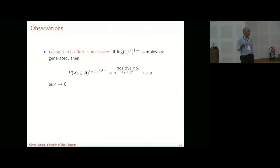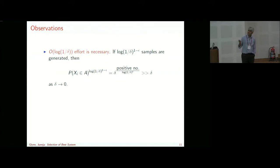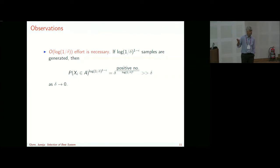Some observations: order log(1/delta) samples are necessary. If you had log(1/delta)^(1−ε) samples for any tiny epsilon, you can choose a set A such that the answer is wrong with probability asymptotically greater than delta. So you need at least order log(1/delta) samples. And in settings where probability of false selection satisfies a large deviation principle, order log(1/delta)^(1+ε) samples are sufficient.